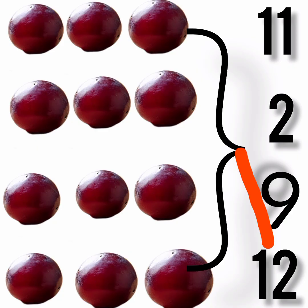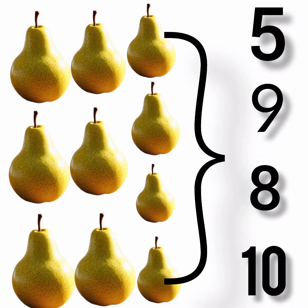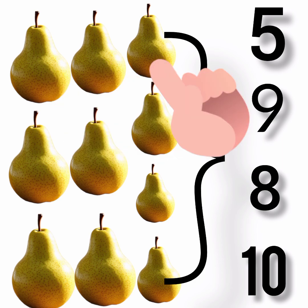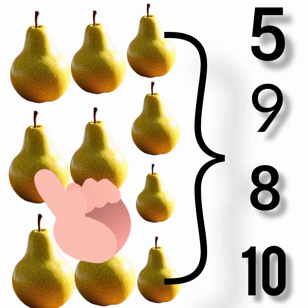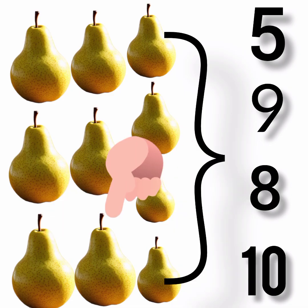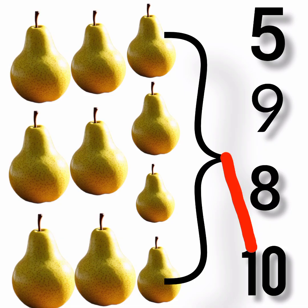How many pears do we have? Let's count: 1, 2, 3, 4, 5, 6, 7, 8, 9, 10. They are 10. So let's match the pear to the number 10. That's correct.